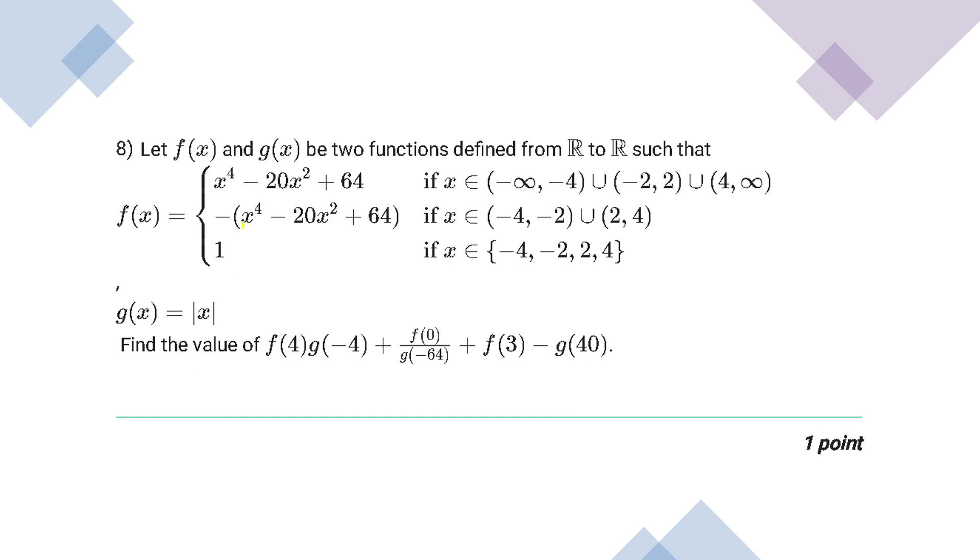Question number 8 says, let f(x) and g(x) be two functions defined from R to R. Now f(x) has this expression when x lies between these values, f(x) is this expression when x lies between these intervals and f(x) is 1 for minus 4, minus 2, 2 and 4, and g(x) is modulus of x.